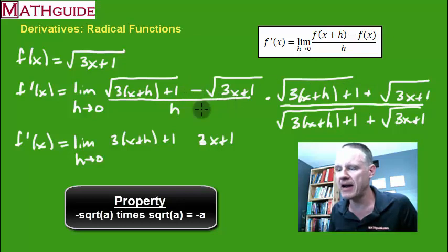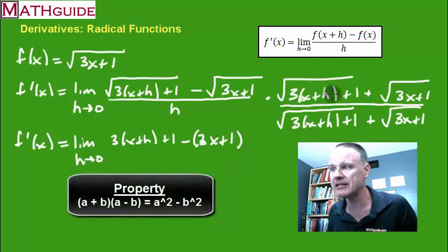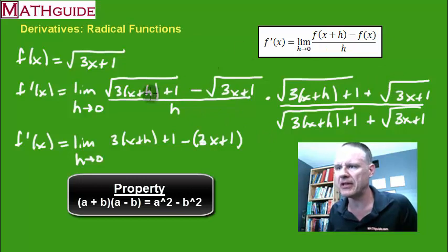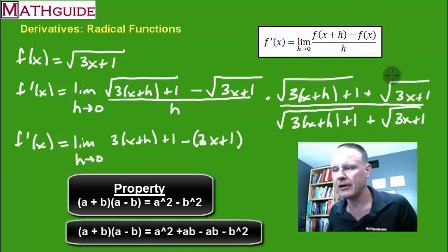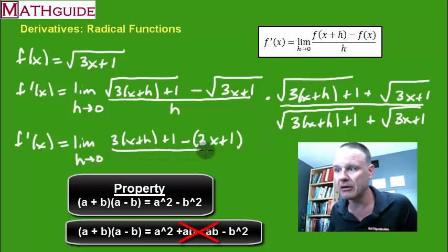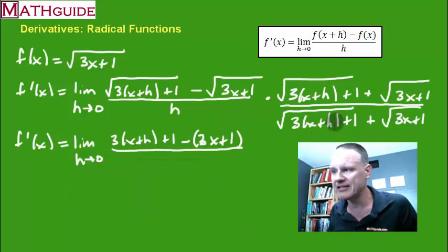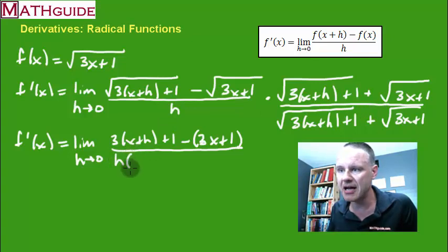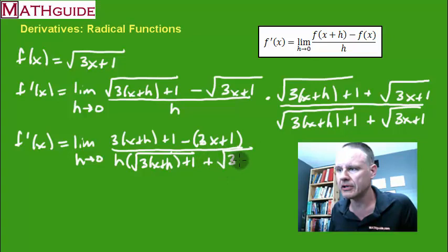And when I multiply this last term times this last term, thinking of these as just two binomials being multiplied together, that term times this term, again the radicals are going to cancel. I'll be left with the 3x plus 1. The radicals cancel, but I still have a minus sign. So it's going to be the opposite of all of this.